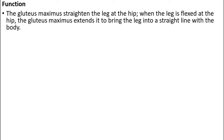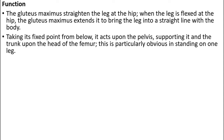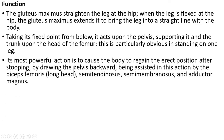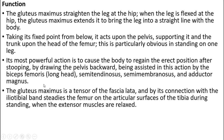The function of the gluteus maximus is to straighten the leg at the hip when the leg is flexed at the hip. It extends the leg to bring it to the straight position. Taking its fixed point below, it acts upon the pelvis supporting it and the trunk on the head of the femur, which is particularly obvious when standing on one leg. Its most powerful action is to cause the body to regain the upright position after stooping, assisted by the biceps femoris, semitendinosus, semimembranosus, and adductor magnus.